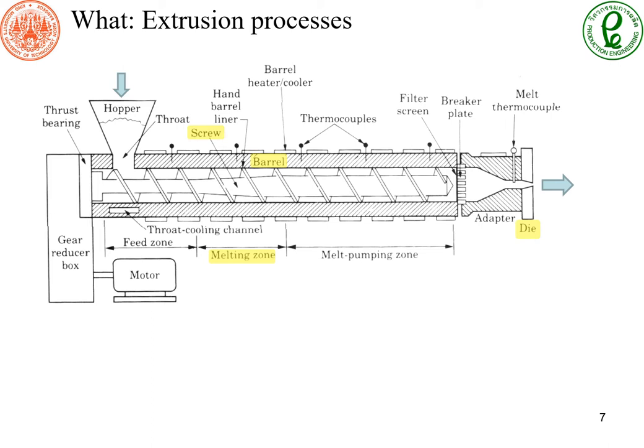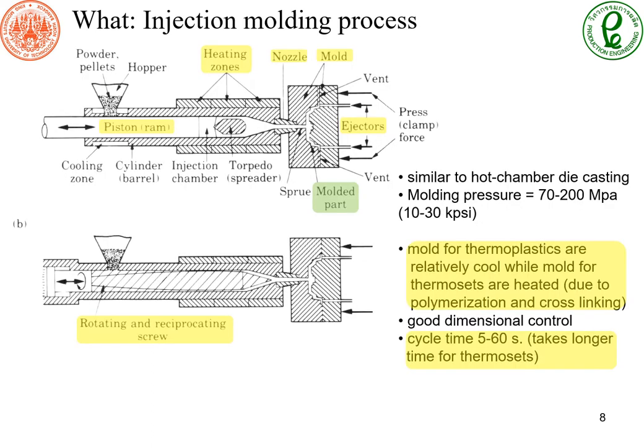Here we have plastic profile extrusion. If we want to make plastic products that are not a long profile, we can change the die to a nozzle and attach the mold to the nozzle. The mold allows liquid plastic to solidify into the desired shape. This injection molding process is very similar to the hot chamber die casting process. We need an ejector in the mold to help push our products out.